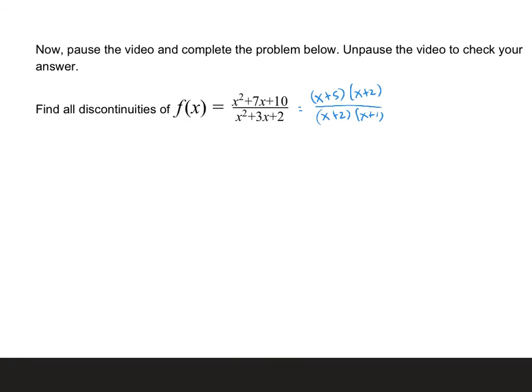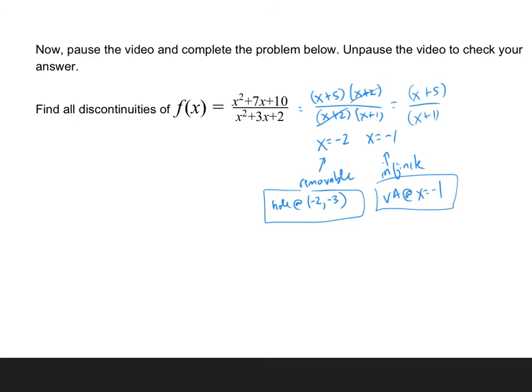First, we're going to factor. Then we're going to identify the excluded values with the denominator equals 0. Then we're going to simplify the fraction. Any factors that have been removed from the denominator are removable discontinuities. Any that are still in the denominator are infinite discontinuities. The infinite discontinuity is a vertical asymptote, and we get the coordinates of the removable discontinuity for the hole by plugging that number into the simplified version.